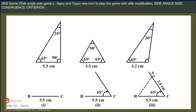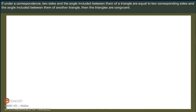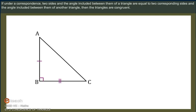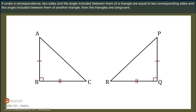Side-Angle-Side Congruence Criterion. If under a correspondence, two sides and the angle included between them of a triangle are equal to two corresponding sides and the angle included between them of another triangle, then the triangles are congruent.